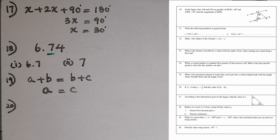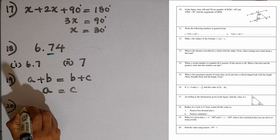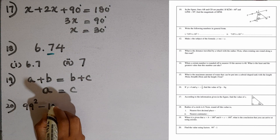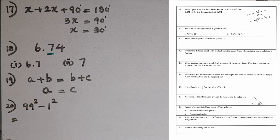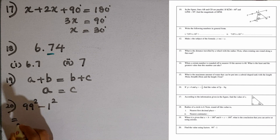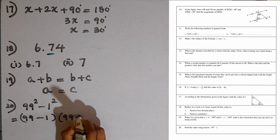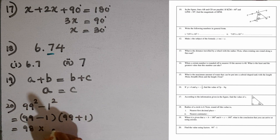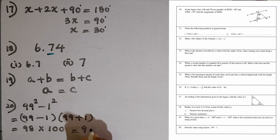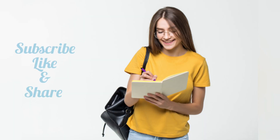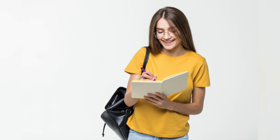Question number 20, the last one: find the value of 99 squared minus 1 using factors. Since 1 can be written as 1 squared, we apply the difference of two squares: 99 squared minus 1 squared equals (99 minus 1)(99 plus 1), which is 98 multiplied by 100. The answer is 9,800.